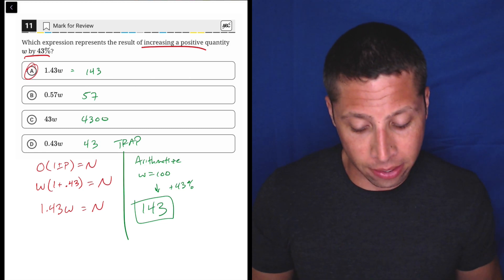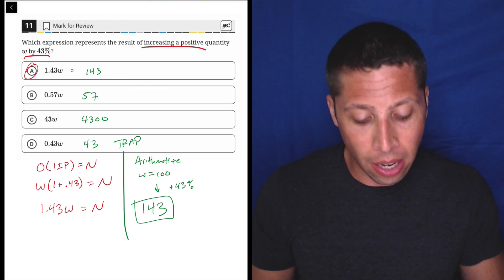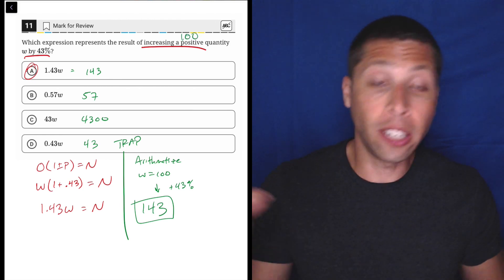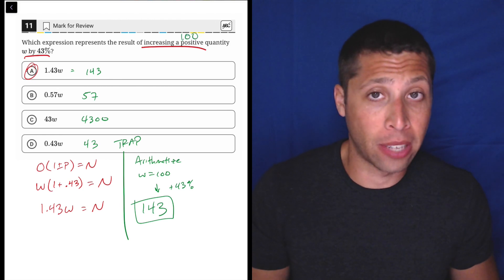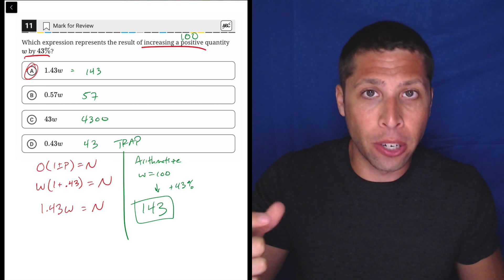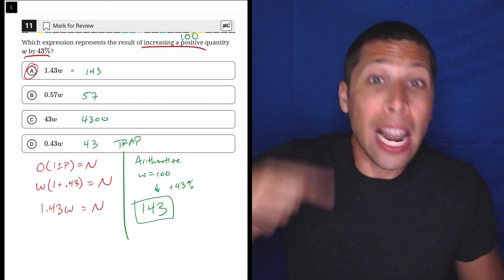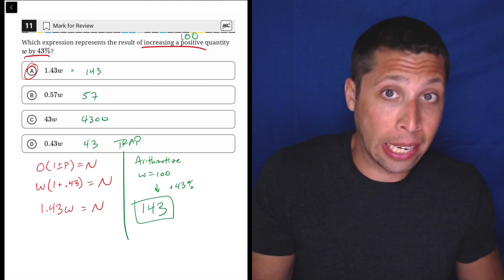So I think maybe this is where arithmetize helps is if you're unsure, it maybe is easier to kind of just read the sentence as which expression represents the result of increasing 100 by 43%. Now you have a number. You're like, oh, it's got to be bigger than 100. I'm increasing it by that.